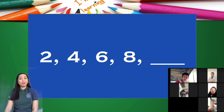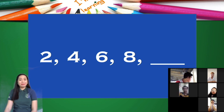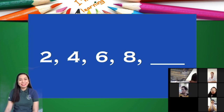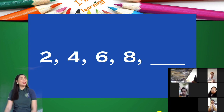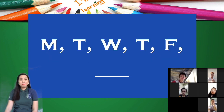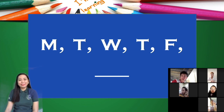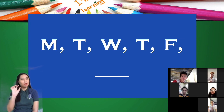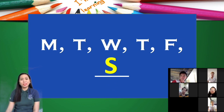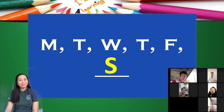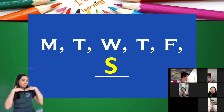I have here fill in the blanks. I started with 2, 4, 6, 8, and blank. The answer is 10. Next: M, T, W, T, F — it looks familiar, right? I think I've seen it posted somewhere in your house. The answer here is actually the letter S. So we have Monday, Tuesday, Wednesday, Thursday, Friday, and then Saturday.